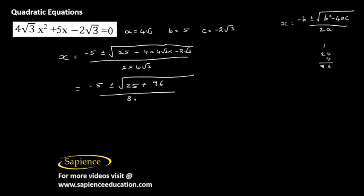Equal to minus 5 plus or minus square root of 96 plus 25, which will be 121, divided by 8 root 3. Equal to minus 5 plus or minus 11, divided by 8 root 3.